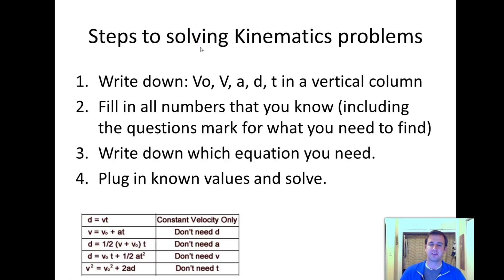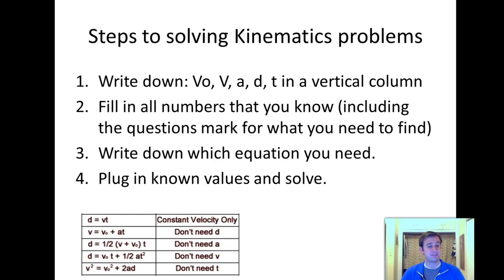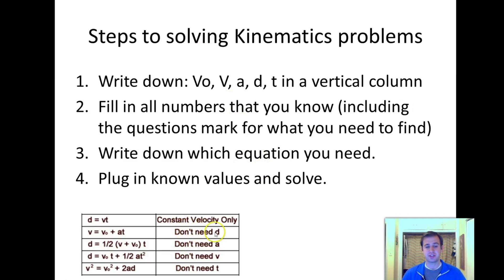To solve our kinematics problems, the first step is we write down V0, V, A, D, T in a vertical column. We fill in all of the numbers that we know, which includes adding a question mark next to the variable we're trying to find. Then there's always going to be one variable that we don't know, so we write down the equation we need based on what we don't have — for example, on the chart where it says 'don't need D,' if we have everything else except D, we'll use that equation to solve.